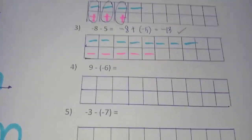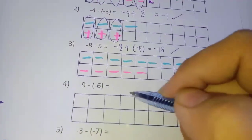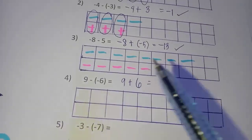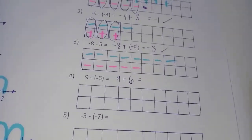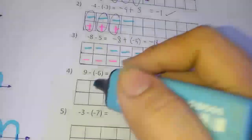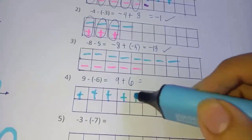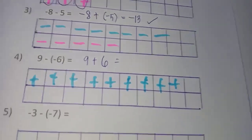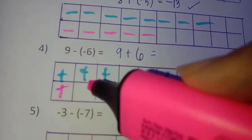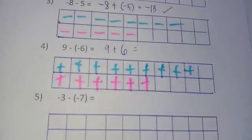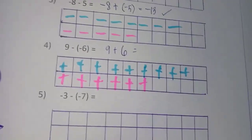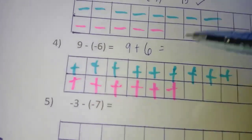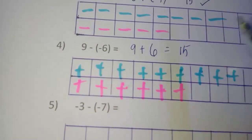Example 4: nine minus negative six, rewritten as nine plus six. Draw nine positive signed tiles, then six positive signed tiles. There are no negative tiles, so no cancellation occurs. Count all positive tiles: one through fifteen. Therefore, nine minus negative six equals fifteen.